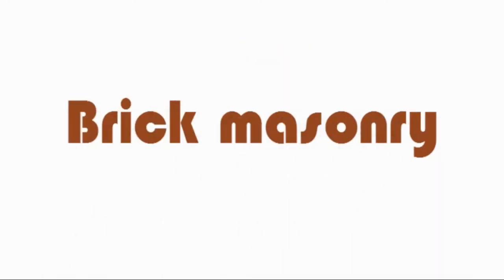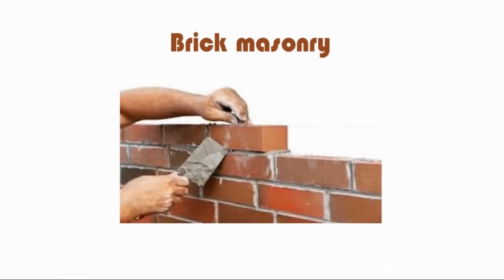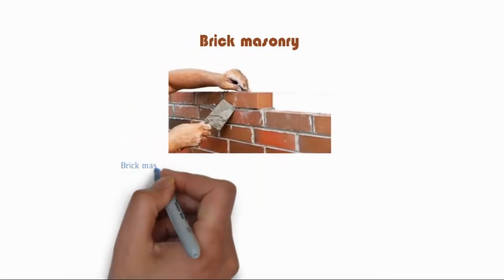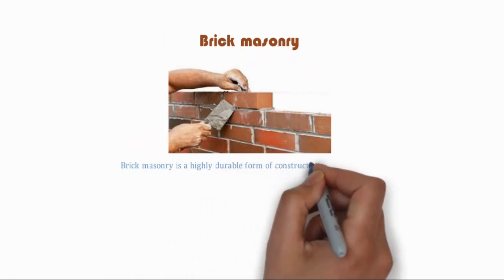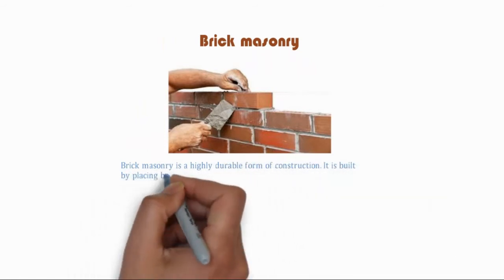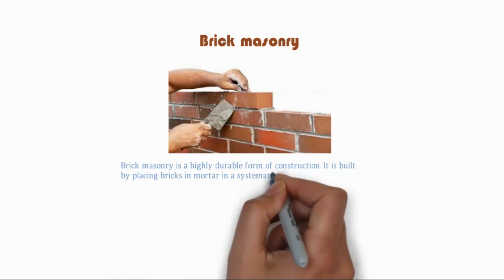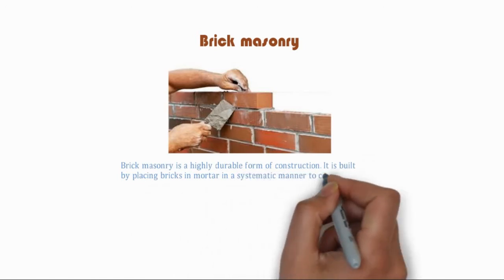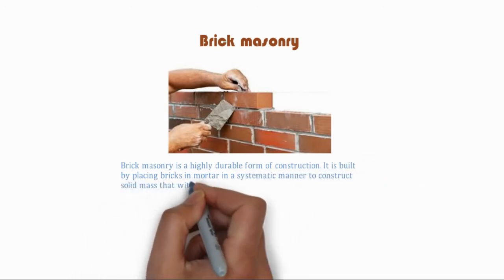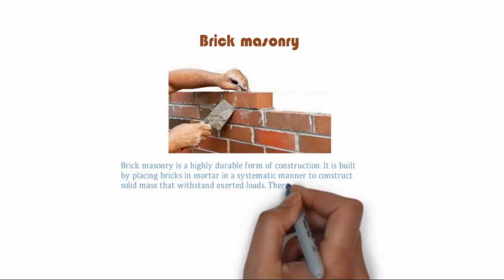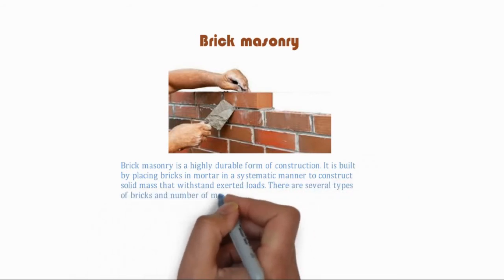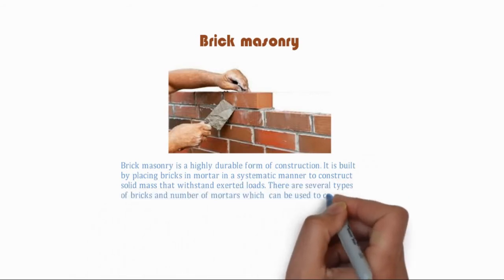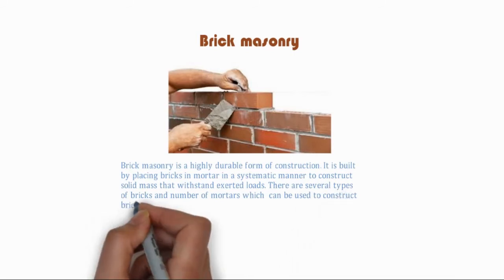Brick masonry is a highly durable form of construction. It is built by placing bricks in mortar in a systematic manner to construct a solid mass that withstands exerted loads. There are several types of bricks and mortars which can be used to construct brick masonry.